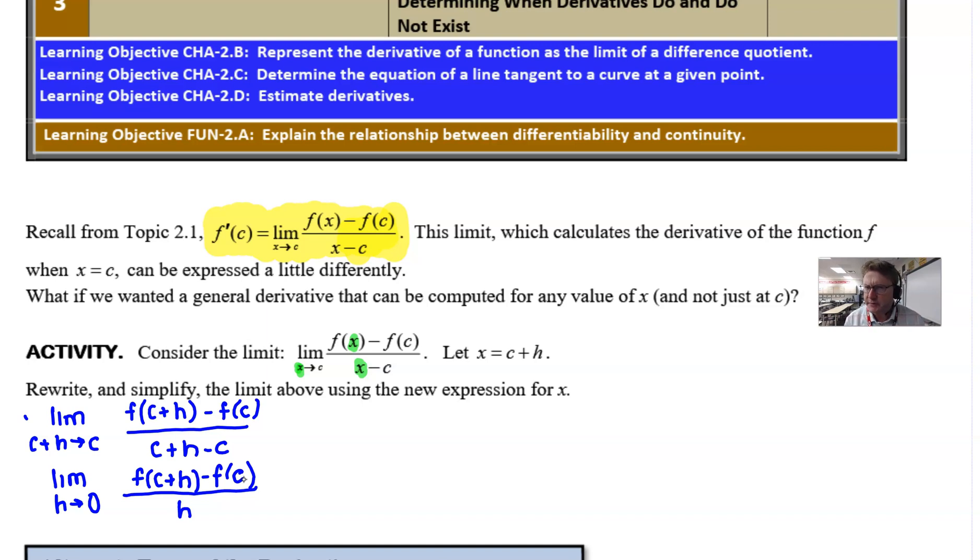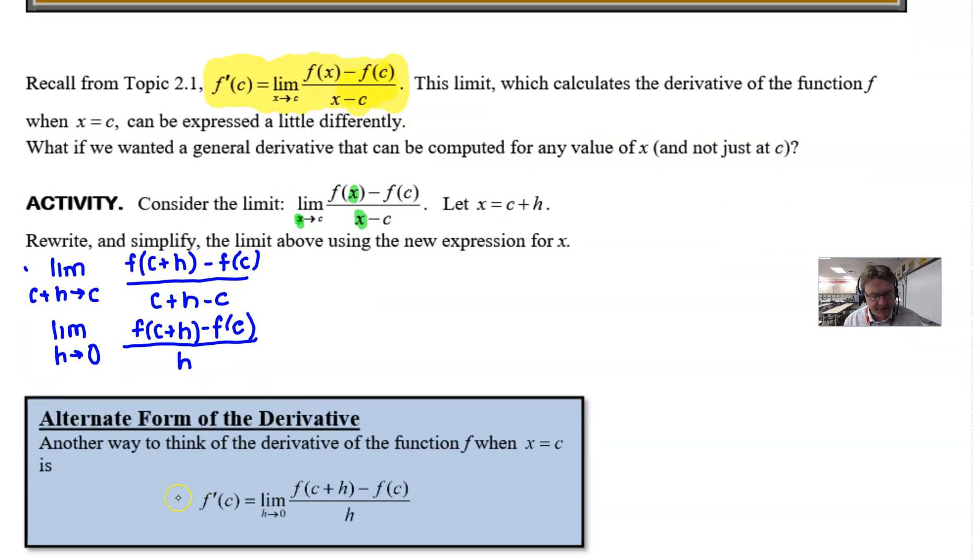So what do we do with this? Well, we're kind of done; we can't really do much of anything else with it. Well, what we have is this alternate form of the derivative. As you can see here at the bottom of your screen, it's just another way to think of the derivative of the function f when x is equal to c.